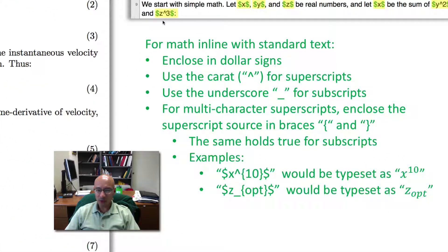You can use underscores to get subscripts. Multi-character superscripts or subscripts require that you enclose the superscript or subscript in braces. I give you a couple examples here. I didn't put them in the typesetting, but here is a two-character superscript with x to the power 10 and a three-character subscript z subscript opt. And it turns out you can make subscripts that have subscripts or superscripts that have superscripts.